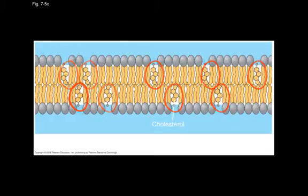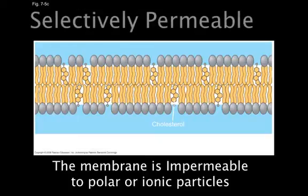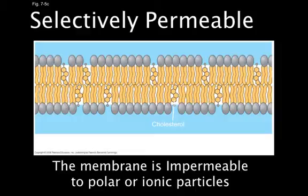Because the fatty acid tails are hydrophobic, the membrane is impermeable to water or any other polar or electrically charged particle. This is partly why it's considered selectively permeable. If the cell needs to move a substance through that is polar or electrically charged, well then it has to use channel proteins that allow this to happen.